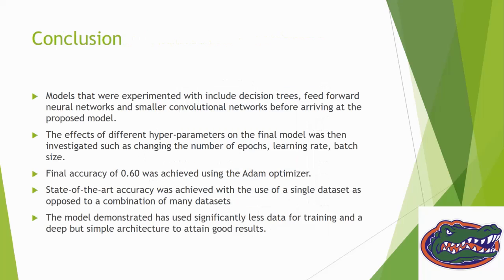In conclusion, the models we experimented with include decision tree, feed forward neural networks, smaller convolutional networks before arriving at the proposed model. The effects of different hyperparameters on the final model were investigated, such as changing number of epochs, learning rate, and batch size. The final accuracy of the proposed model is 0.60, achieved using Adam optimizer. This is very good accuracy. State-of-the-art accuracy was achieved with use of a single dataset as opposed to combination of many datasets. Data plays a very important role in machine learning applications, so more data would make the model perform much better.